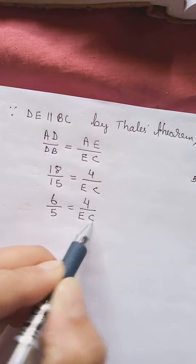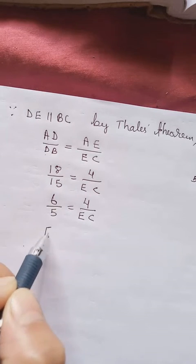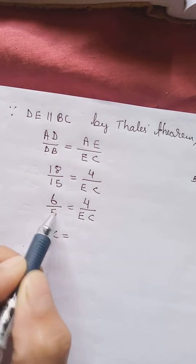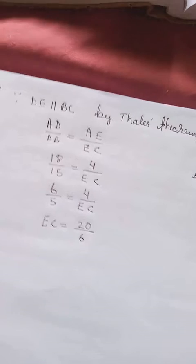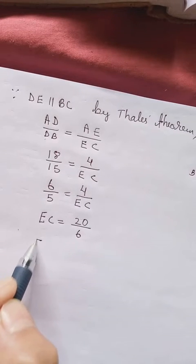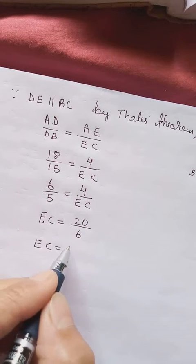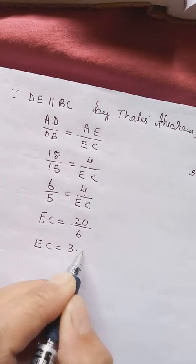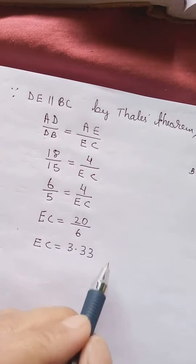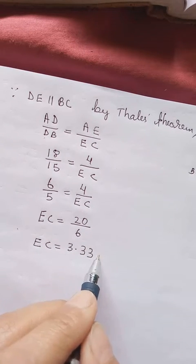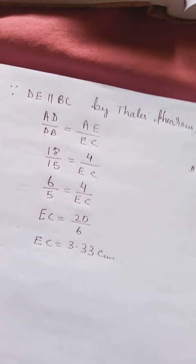We want to find EC. Let's exchange the position. So EC and 6 we can exchange. Then 4 into 5, 20 divided by 6. So EC will be 6 into 3, 18, 20, 6 into 3. So it will be non-terminating decimal. We can take at least two numbers after decimal. We get what we want. That's the end of it.